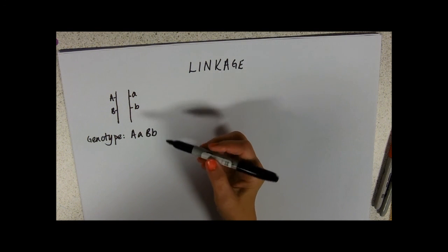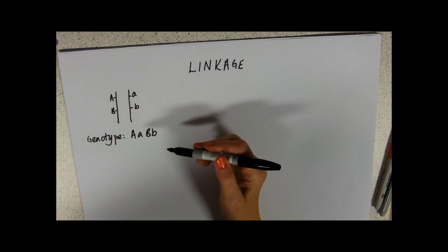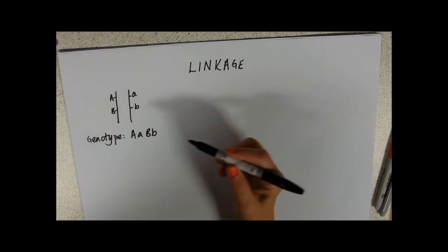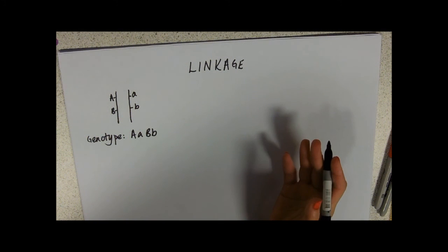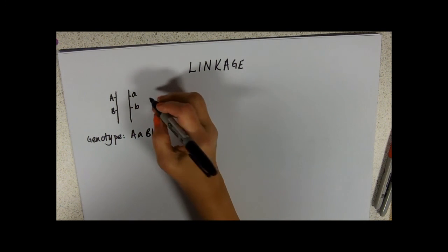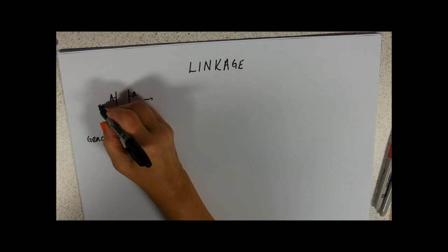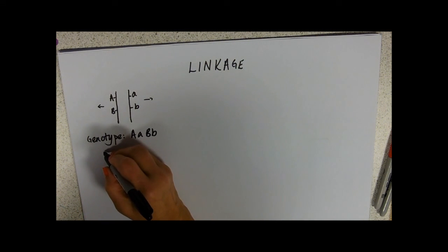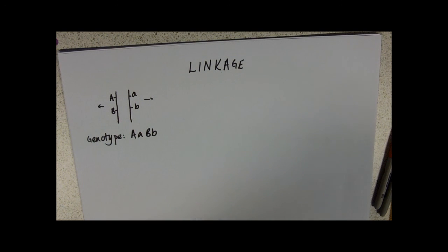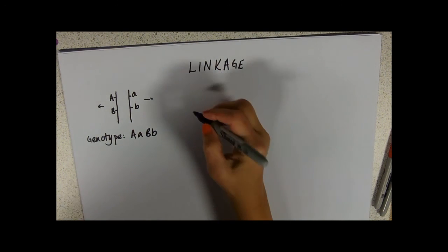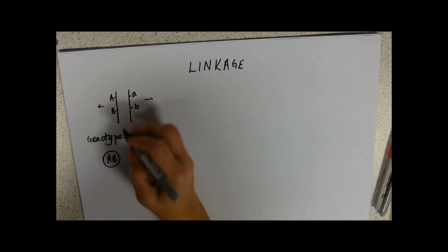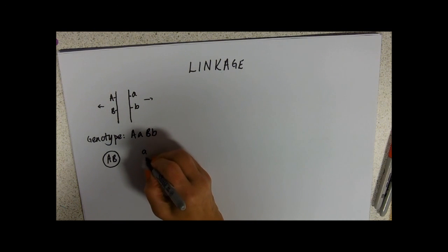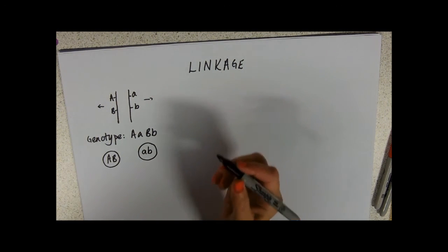Normally you would foil those to get the gametes out. If you were crossing two heterozygotes together, you get the 9:3:3:1 ratio. If you cross it with a homozygote recessive individual, you get the 1:1:1:1 ratio. But because of the way that these are segregating, they're not segregating independently, they are segregating together into the two cells. We only get two gamete types.